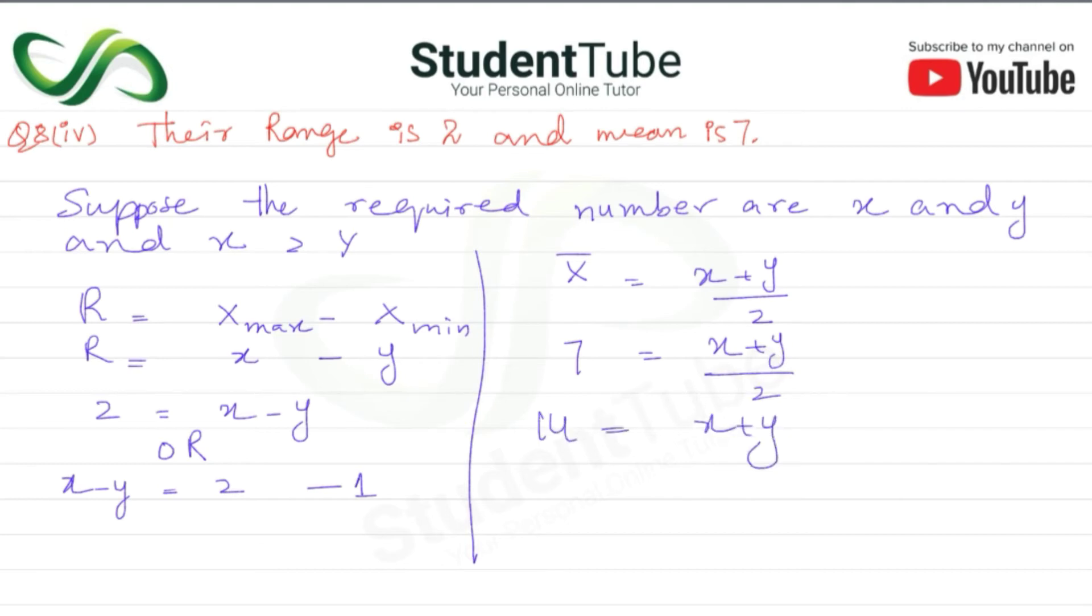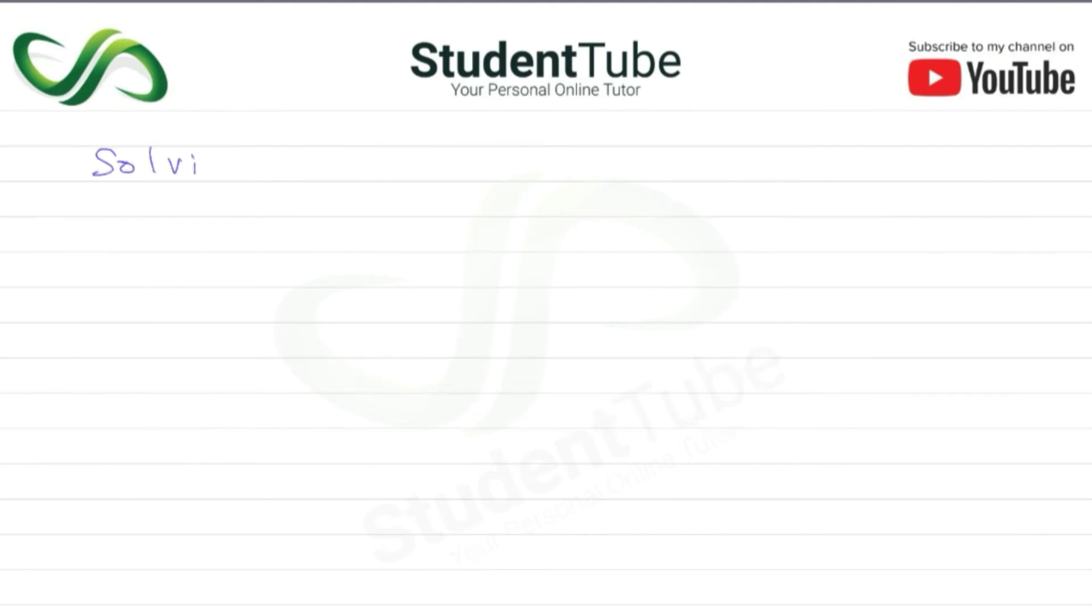Number 1 and 2. So x minus y is equal to 2, x plus y is equal to 14. So yeh ho gai 2x, yeh ho gai cancel, yaha par yeh ho gai 16. So 2x is equal to 16. So x is equal to 16 upon 2. 2 ones are 2, 2 eights are 16. X is equal to 8.